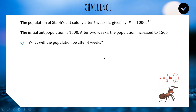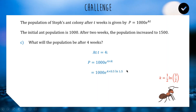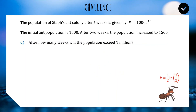Question c: what will the population be after four weeks? Now that we know k, we substitute t equals 4 into p equals 1000 e to the kt. With k equal to one half ln of 3 over 2, we have p equals 1000 e to the 4 times one half ln of 1.5. Feeding this through the calculator gives exactly 2250.